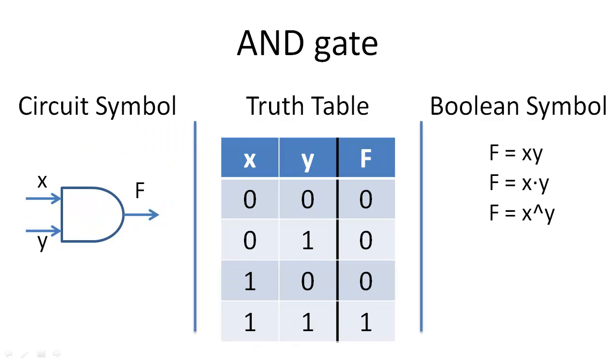The AND gate receives two inputs and transmits one output. The AND gate outputs a 1 when both inputs are 1, and outputs a 0 for all other input combinations.